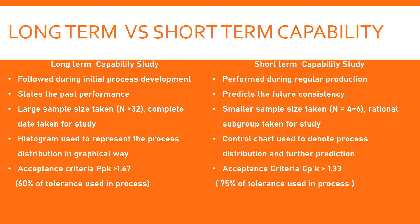The short-term capability study is performed during regular production. It predicts future consistency because here we take only small sample batches. For example, every hour if there are 20 to 25 numbers output, we take random samples of four or five numbers, average them, and calculate the result. These results predict the consistency of the process in the near future. If anything goes wrong, this rational sample output will give an indication.